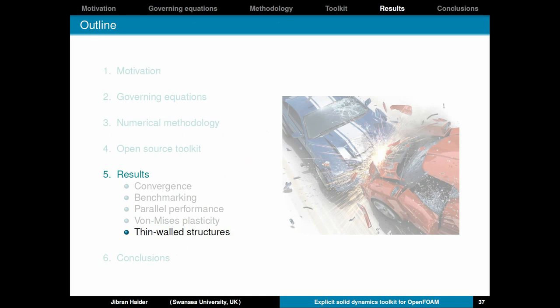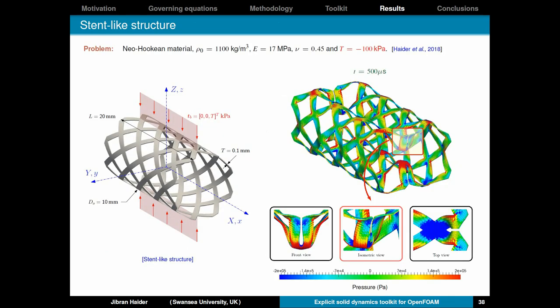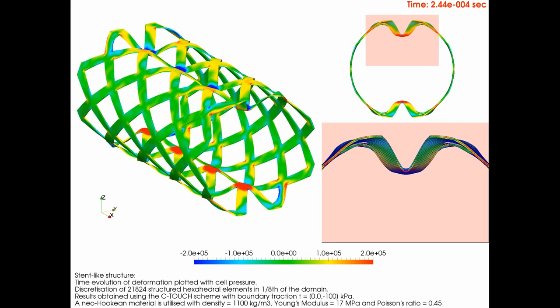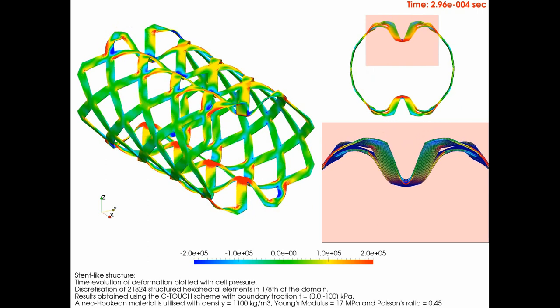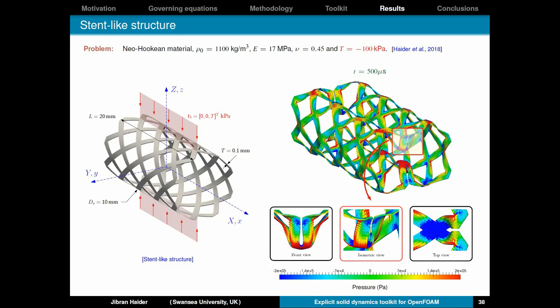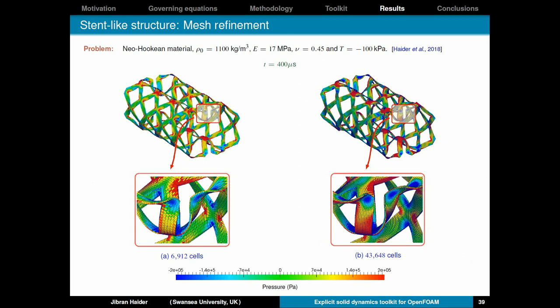Let's talk about some more complex problems of thin wall structures. So here we have a stent like structure. Shown here. Which is very thin, just 0.1mm thickness. And you crush it by applying traction on the top and bottom surfaces. So what you obtain is this deformation at the final time. And let's see the simulation. So this is how it deforms and you can again see smooth pressure distribution. So we have done some mesh refinement and as you can see you refine from almost 7,000 cells to 43,000 cells. And still you get similar deformation. But you have got a slightly better pressure distribution. Which is expected.